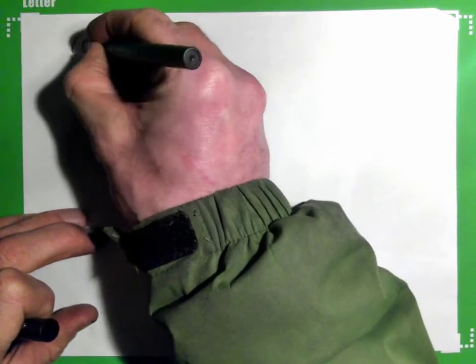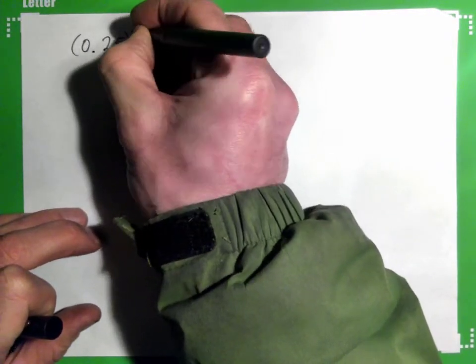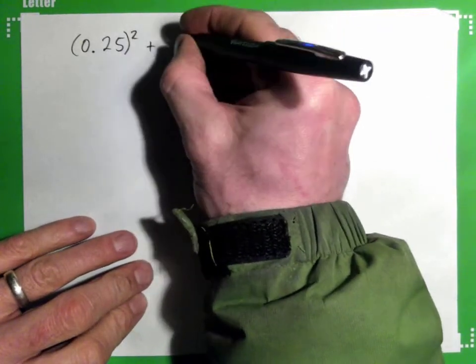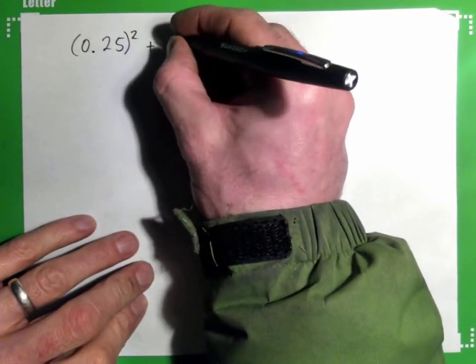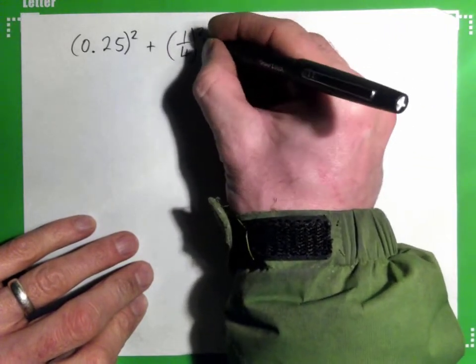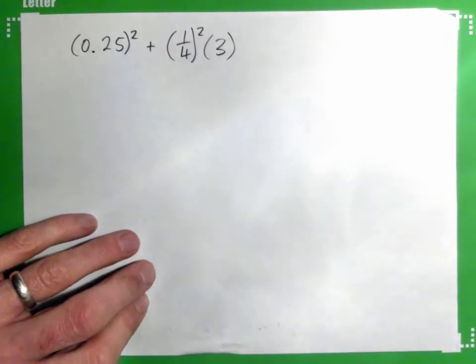0.25 squared plus a quarter squared times 3. Right? So, there's lots of ways of doing this.